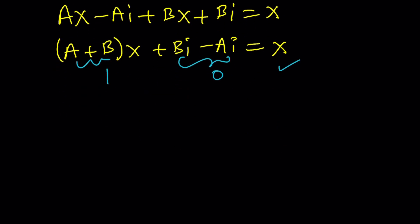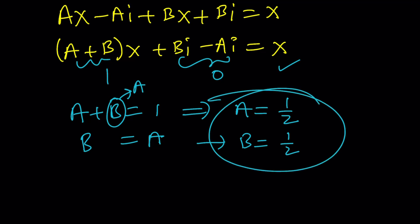This gives us a system of equations. It's linear. a plus b is equal to 1. And bi equals ai, which implies that b equals a. If you replace b with a, you get 2a equals 1, which means a is equal to 1 half. Which means b is also equal to 1 half, because a and b are equal. Wow. That was easy.